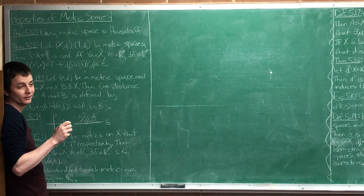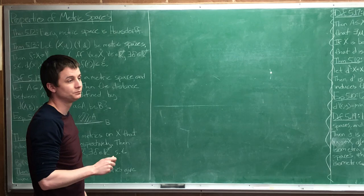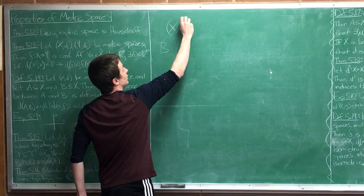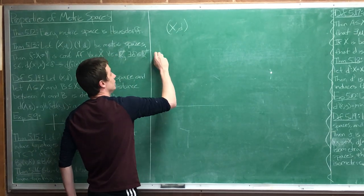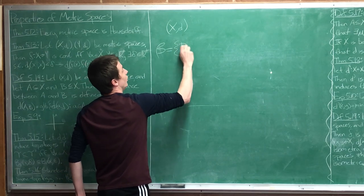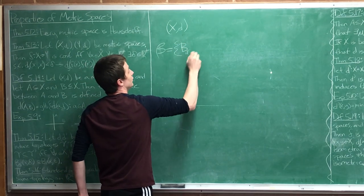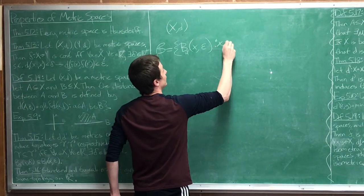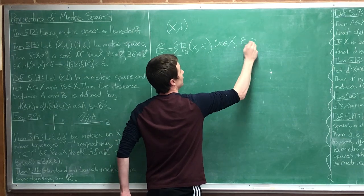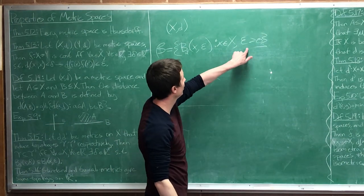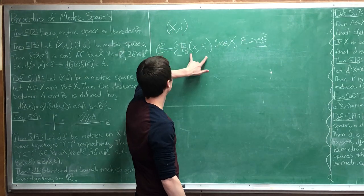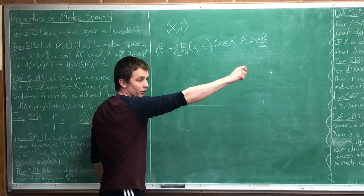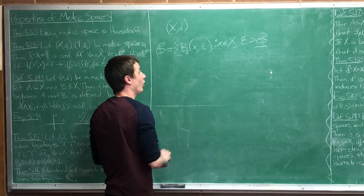Do you remember what our basis is? Our basis elements are the set of all open balls. So if you give me the metric space (X, d), then I make my basis - the set of all open balls such that x is in big X and epsilon is a positive number. Pick any positive number you want and pick any point in there, create this open ball. That's one basis element.